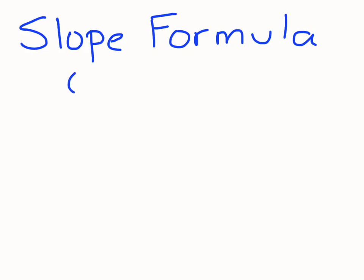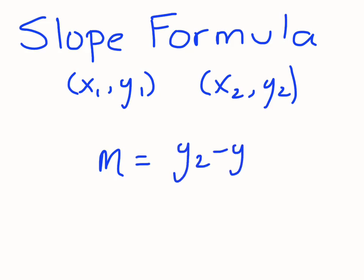If we have two points on a line, x1, y1, and x2, y2, the slope formula is—and the symbol we use for slope is m—y2 subtract y1, all over x2 subtract x1. The slope formula is really straightforward to use, but it does have a lot of applications.